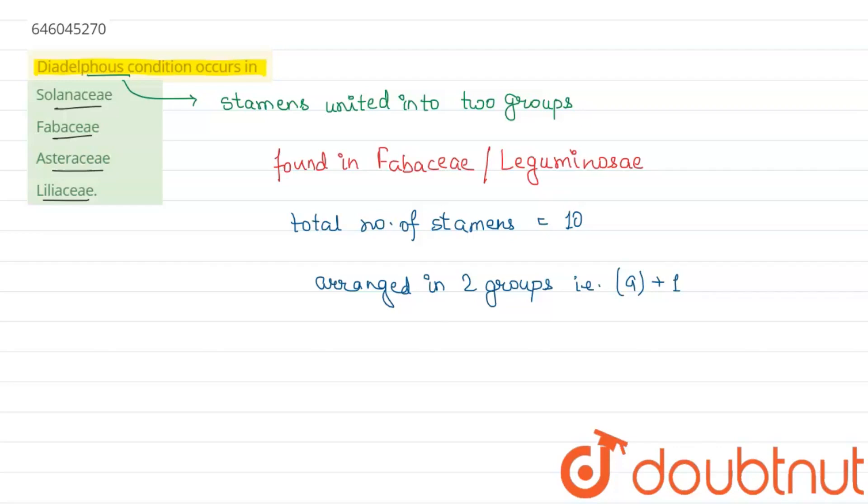9 plus 1 means this 1 which is written here corresponds to one posterior stamen. That is, posterior stamen is free.